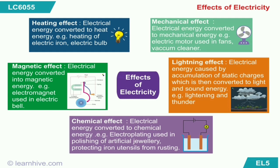In the chemical effect, electrical energy is converted into chemical energy. Examples include electroplating for artificial jewelry, protecting iron utensils from rusting, purification of metals, electrolysis of water, etc.